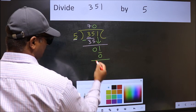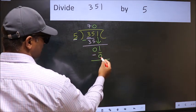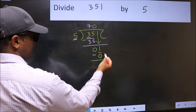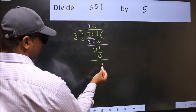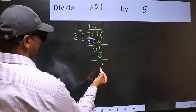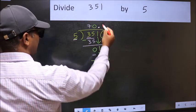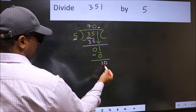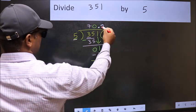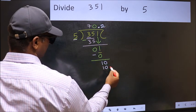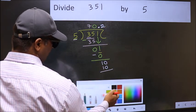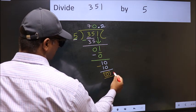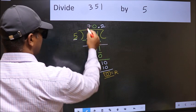Now you should subtract 1 minus 0 equals 1. Over here we did not bring any number down, and 1 is smaller than 5, so now you can put dot and take 0, so 10. When do we get 10 in the 5 table? 5 times 2 is 10. Now you should subtract 10 minus 10 equals 0. So this is our remainder and this is our quotient.